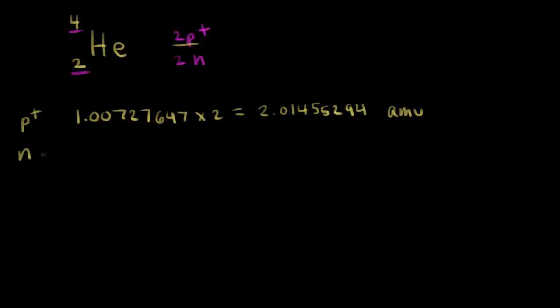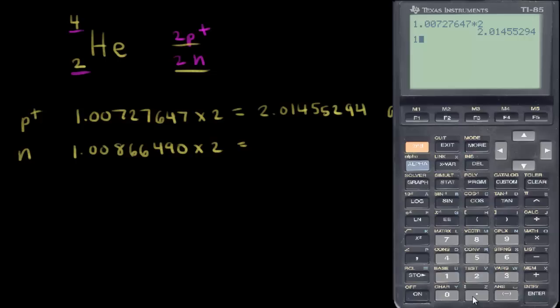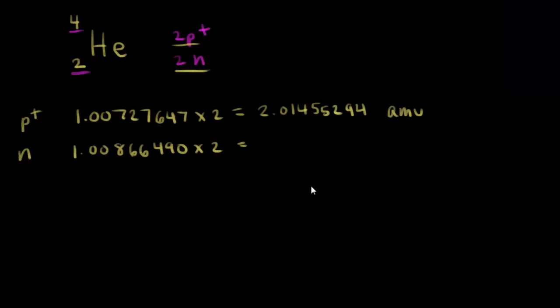A neutron has a mass in AMUs of 1.00866490. And we have two neutrons, so we have to multiply this number by two. So 1.00866490 times two gives us 2.01732980 AMUs.